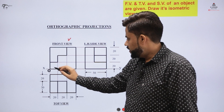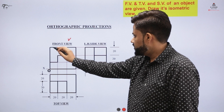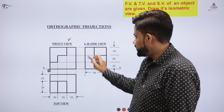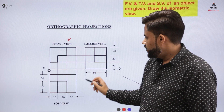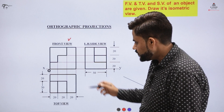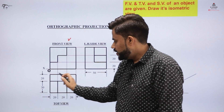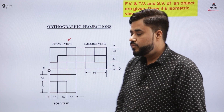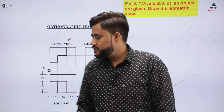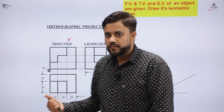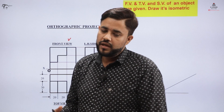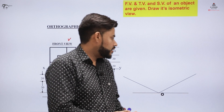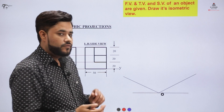The dimensions are: this length is 20, this length is also 20. In the side view, the lengths are mentioned, and the top view also has an object with lengths mentioned. We will start the isometric conversion of this object by following the same process or diagram we have used previously.